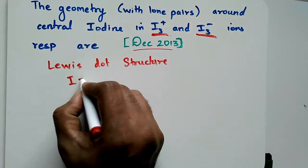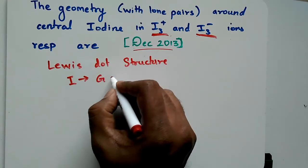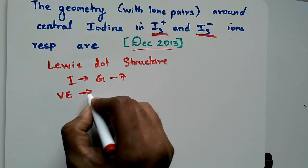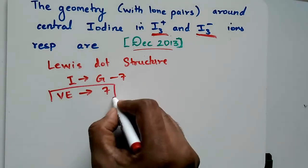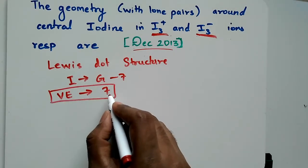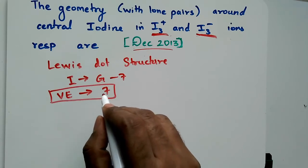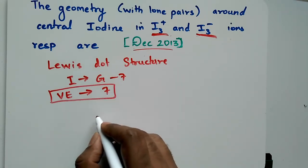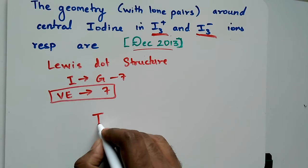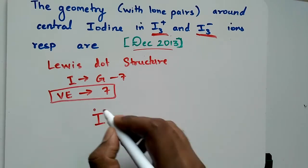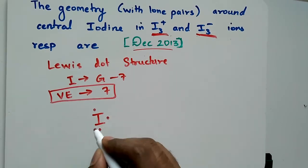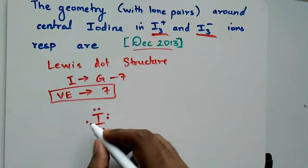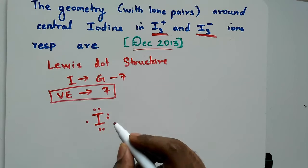In the Lewis dot structure, we have to remember that iodine belongs to group 7, so the valence electrons will be only 7. We are concerned only about the 7 valence electrons and none other. The central iodine should have 7 valence electrons, so I have put the 7 valence electrons.